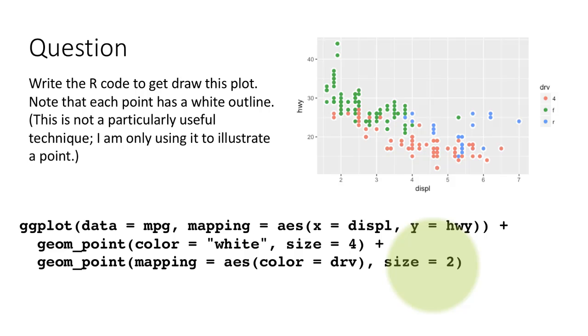This time I'm saying color equals drive, size is smaller now. So exactly at those very same points, you're going to plot all these colored points. That's what is causing the graph to get this sort of appearance. Now think a little bit about what would have happened if we had interchanged the positions of the two layers—if I had put geom_point mapping this one first and then said geom_point color equals white.